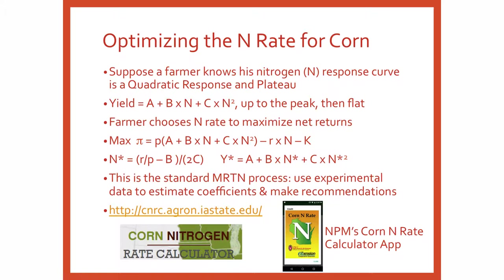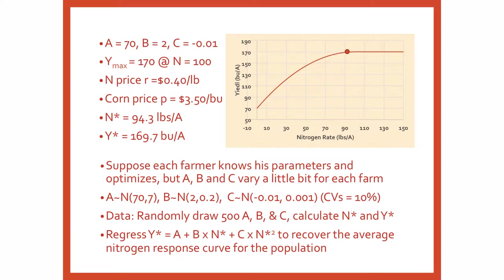This is essentially what's underneath the maximum return to N — the process we use to develop recommendations. The whole Midwestern region uses the corn nitrogen rate calculator; UW's NPM has a smartphone app for it. So here's what it would look like: nitrogen rate on the x-axis, yield on the y-axis — it goes up quadratically, hits the peak, and goes flat. In this simulated example, A is 70, B is 2, C is minus 0.01. The maximum is 170 bushels at 100 pounds of nitrogen. With nitrogen price at 40 cents and corn at $3.50 a bushel, the optimal nitrogen rate is 94.3 pounds and yield is 169.7 bushels — that's maximizing returns.